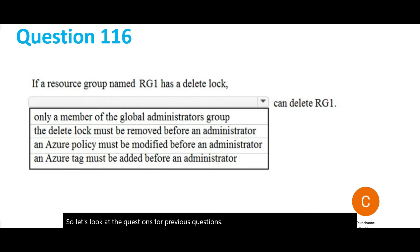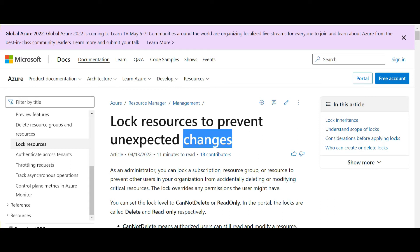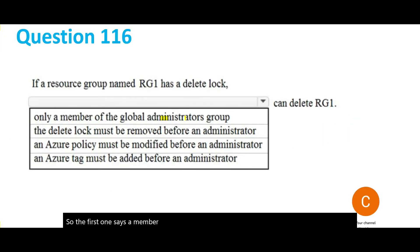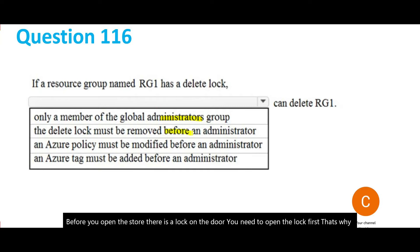If there is a delete lock on a resource group, who can delete the resource group? We lock resources to prevent accidental deletes or unexpected changes. The first option says a member of the global administrator group — but any user must first remove the lock before deleting. The correct answer is that the delete lock must be removed before an administrator can delete the resource group.